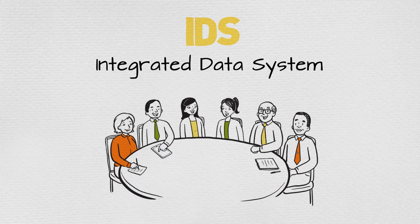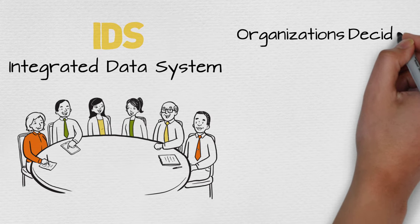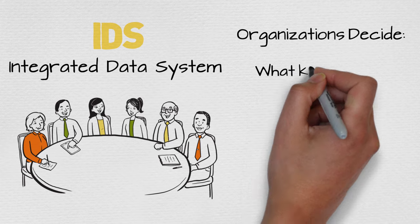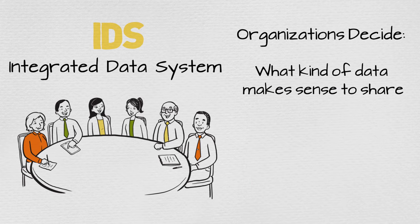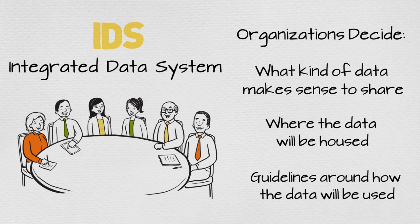How exactly does it work? It's a partnership among agencies that share a set of ground rules and agreements. Together the organizations decide what kind of data makes sense to share, where the data will be housed, and guidelines around how the data will be used.